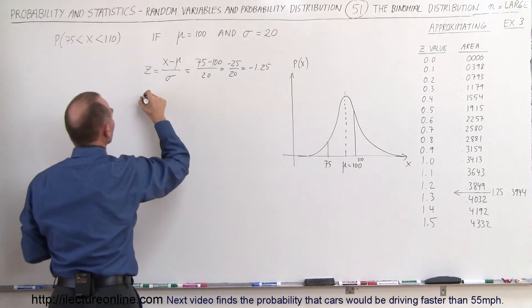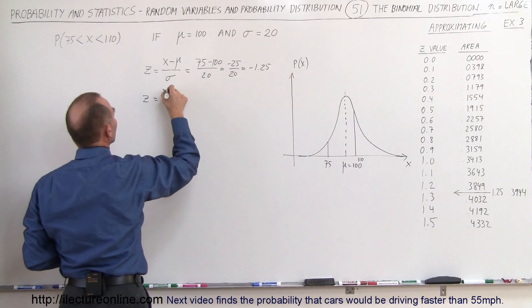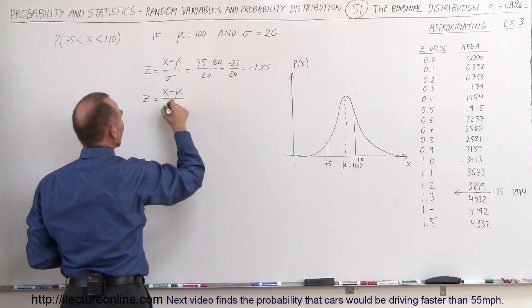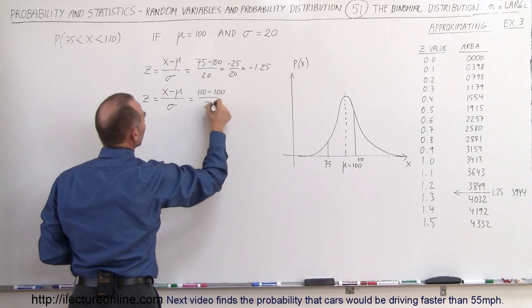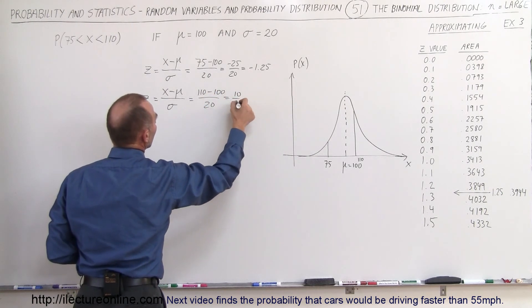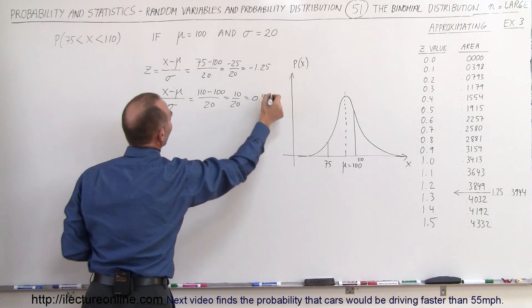On the other side, z is equal to x minus the expected value divided by the standard deviation, which is 110 minus 100 divided by 20, which is 10 divided by 20, which is 0.5.